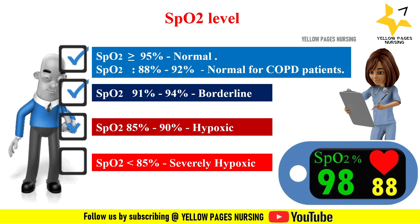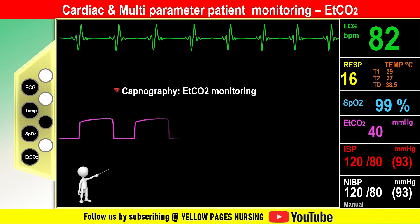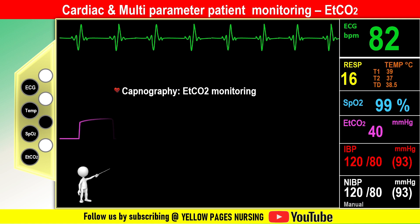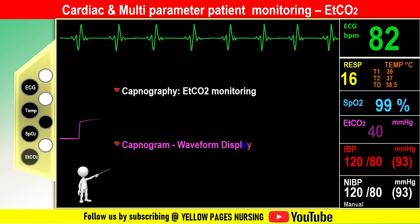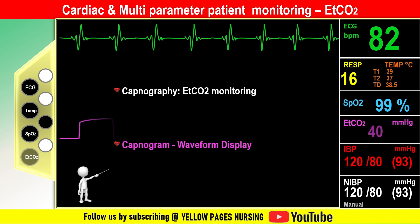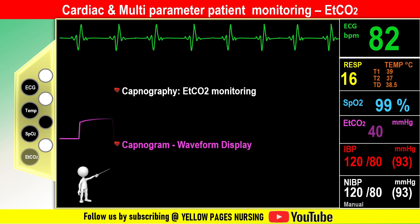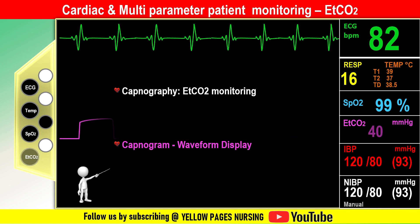EtCO2 monitoring uses mainstream and sidestream measuring modes. Cardiac monitors have capnography to measure end-tidal carbon dioxide levels to assess respiratory status. End-tidal carbon dioxide is the partial pressure of CO2 at the end of an exhaled breath. The EtCO2 sensor probe from the monitor is connected via nasal prongs, a face mask, or an endotracheal tube to collect a sample of exhaled air.